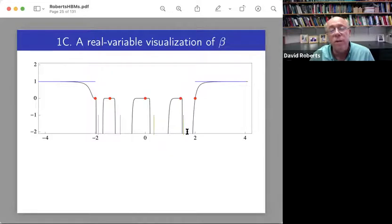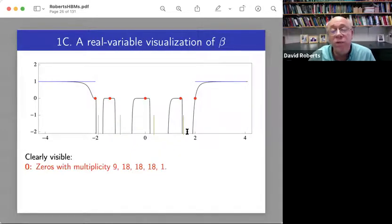But it's so extreme that it doesn't look all that much like what you normally write down. So let's track through the things that we talked about on the previous slide with reference to this picture. So we have zeros. We already figured out their multiplicities were 9, 18, 18, 18, and 1 from the numerator.